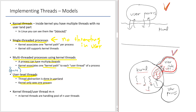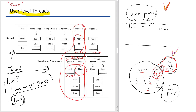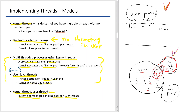The last model is the kernel thread / user thread M:N model. This is a hybrid between kernel threads and user-level threads. M kernel threads handle a pool of N user-level threads. It can be done and is being used.